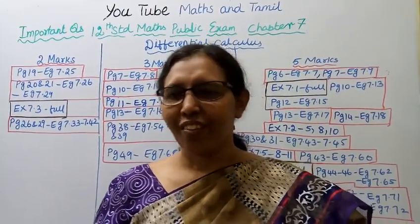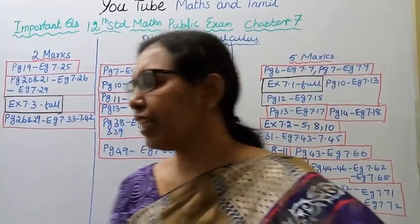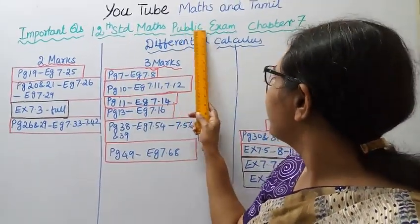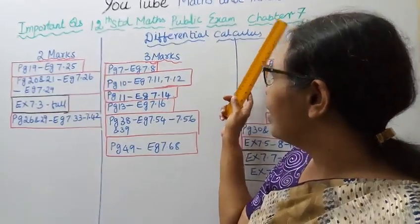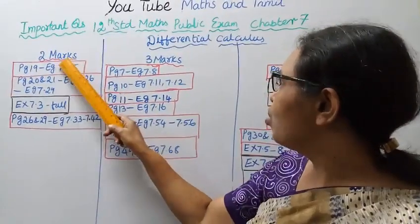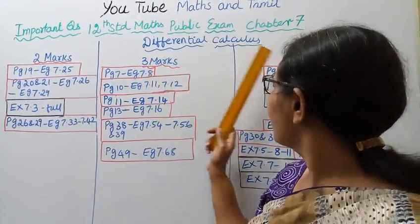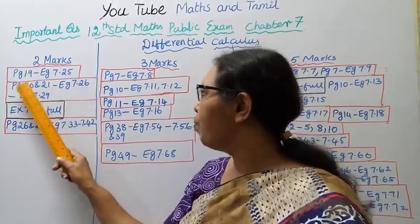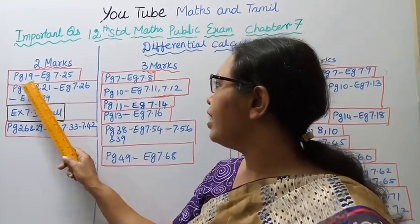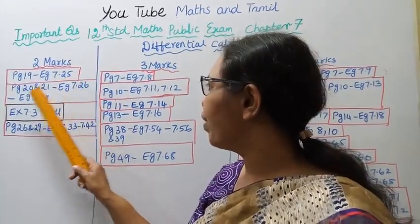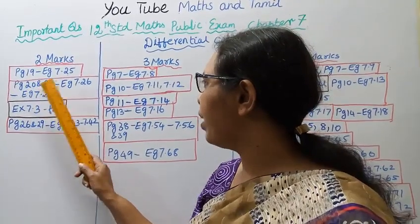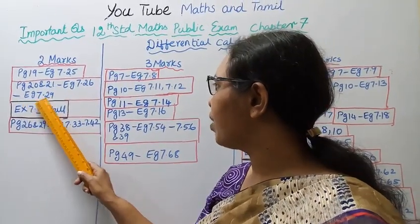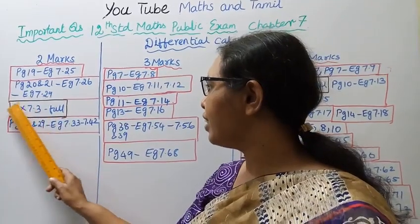Hello students, welcome to Max and Family Channel. 12th standard Max public exam Chapter 7 important questions — 2 marks, 3 marks, 5 marks — differential calculus. 2 marks: page 19 example 7.25, page 20-21 example 7.26, example 7.29, exercise 7.3 full practice, page 26 and 29 example 7.33 and 7.42.